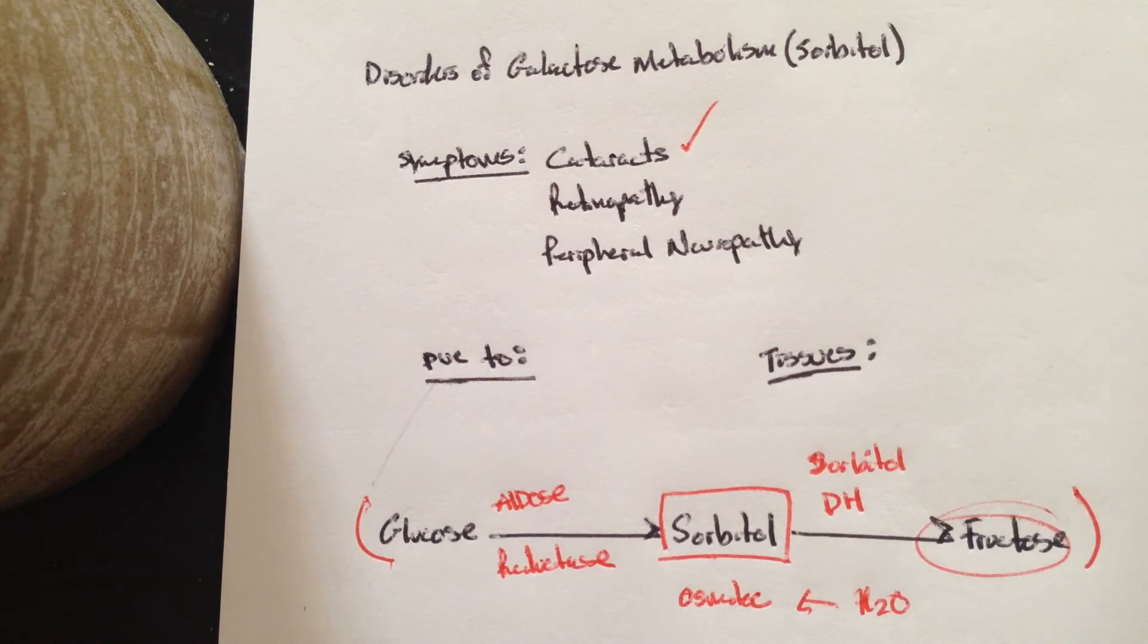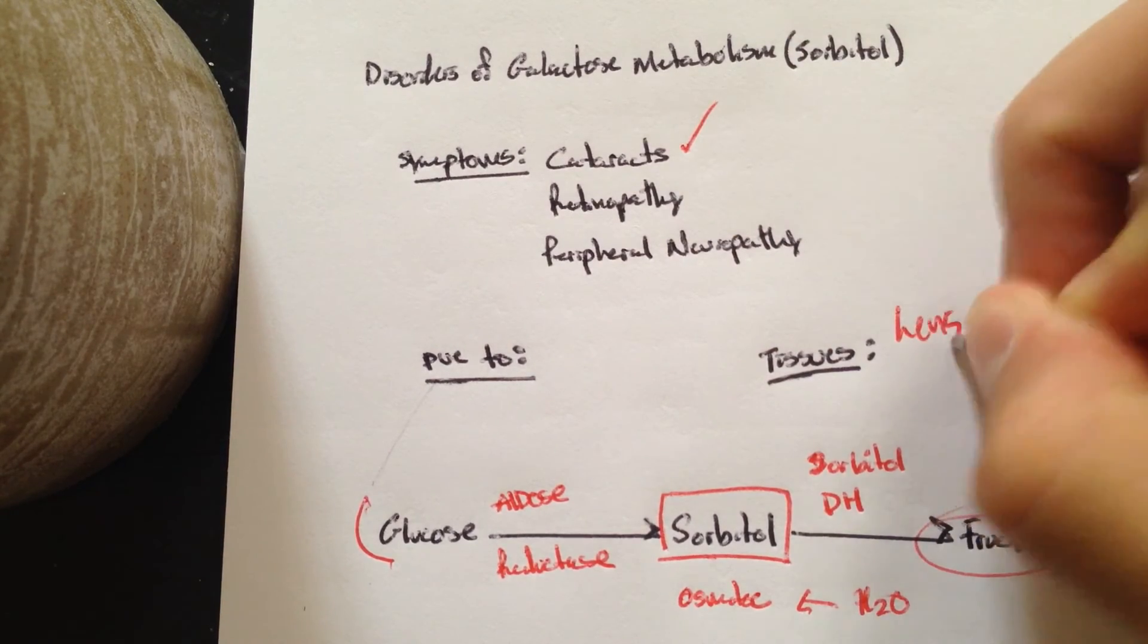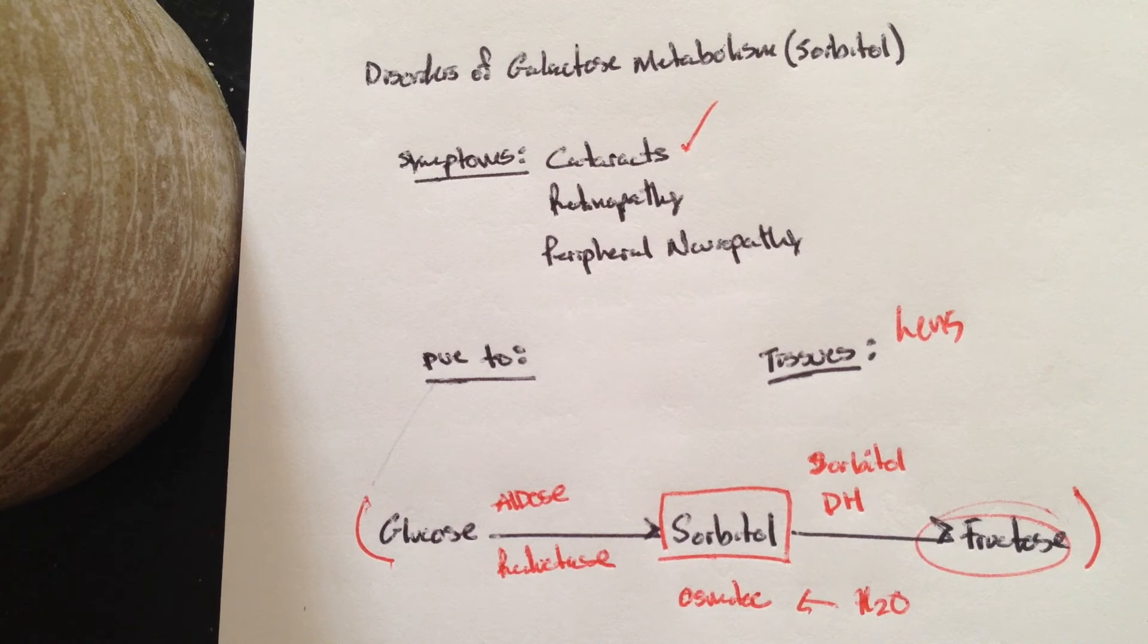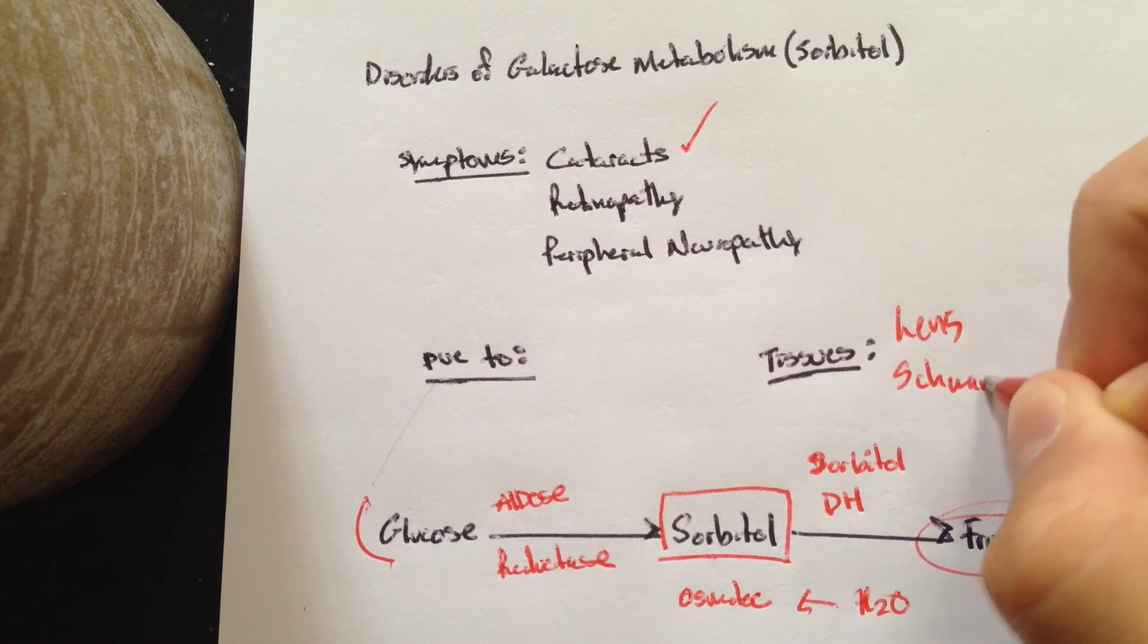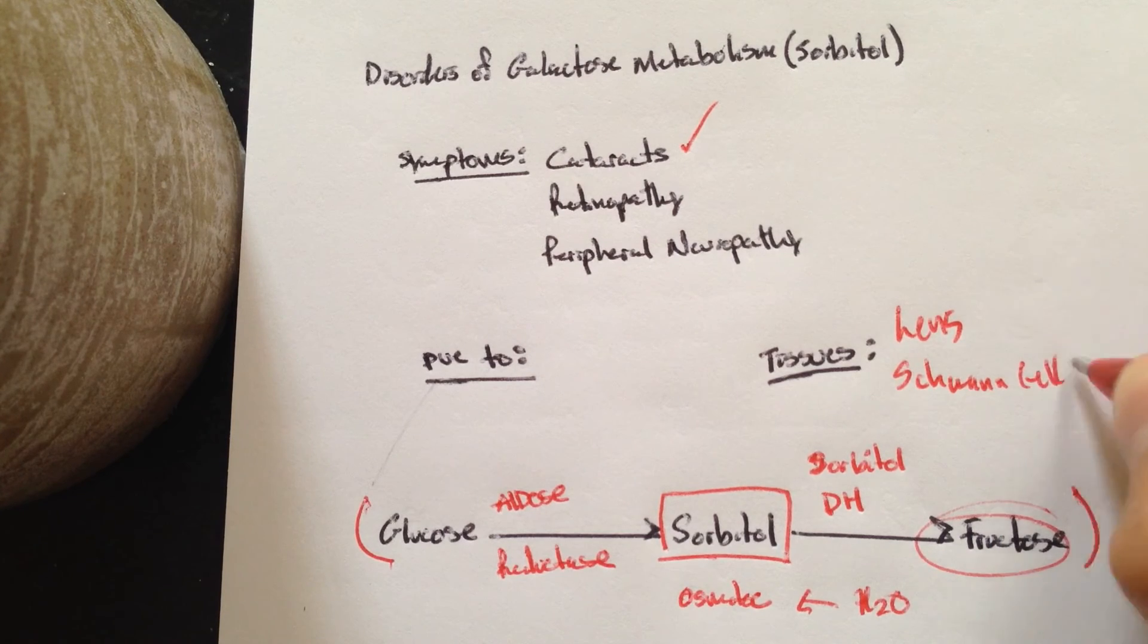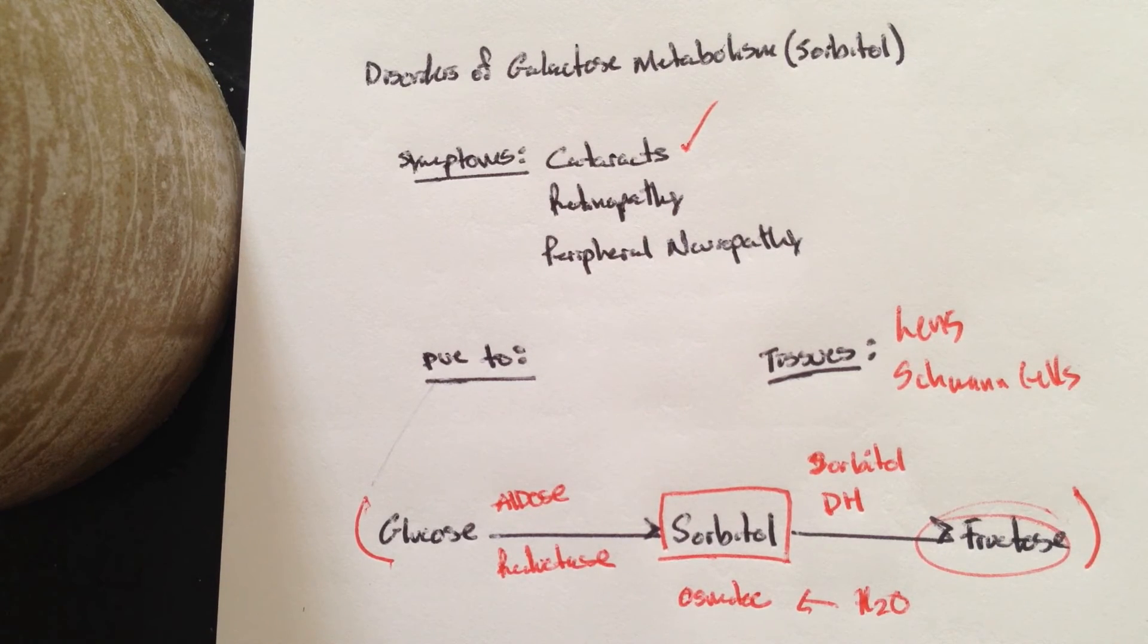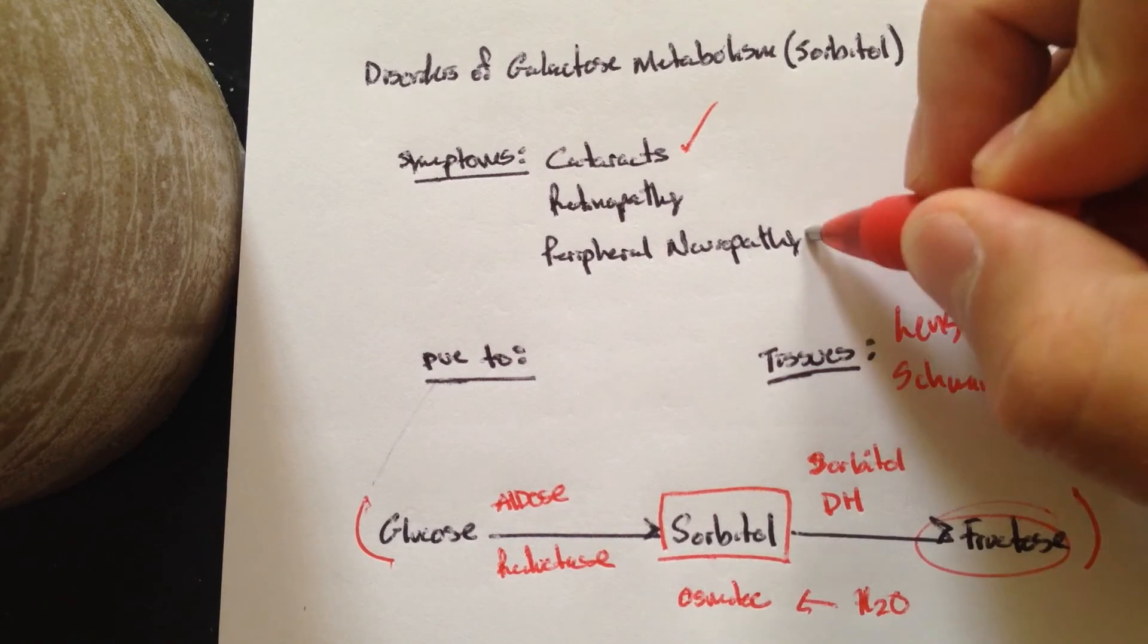Other tissues other than the lens where this can occur - this can also occur in the Schwann cells, which are involved with, if there's an increase in sorbitol there and they dysfunction, you can have peripheral neuropathy.